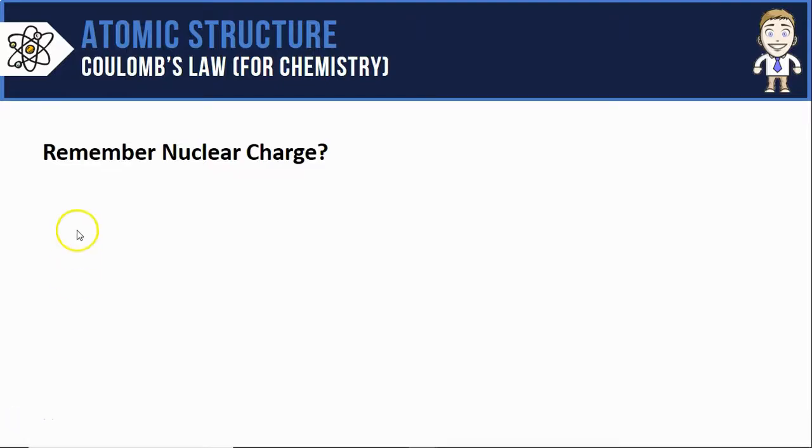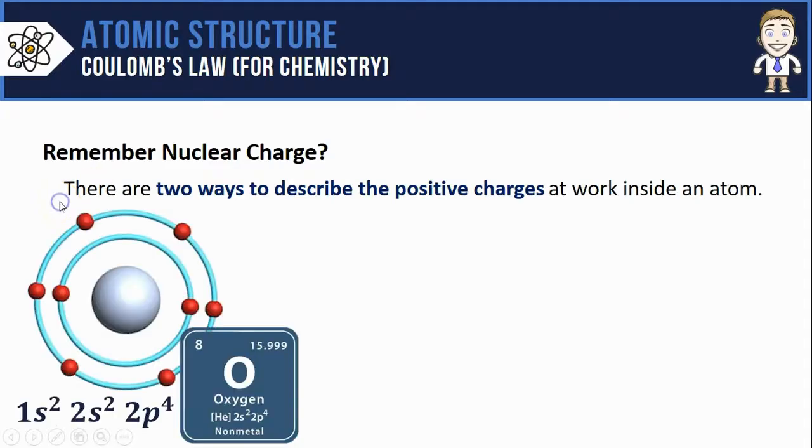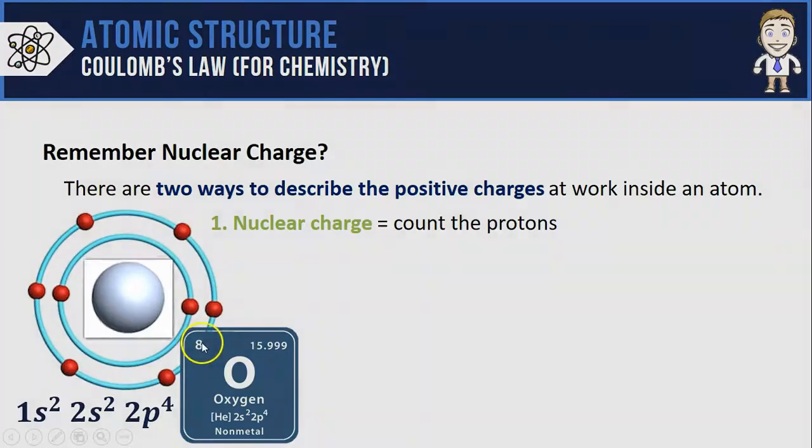To do this we've got to remember some things about nuclear charge, in particular the two ways to describe the positive charges at work inside an atom. Take this oxygen atom for example. It has a nuclear charge that is the result of the protons in the nucleus. Eight protons on oxygen means a nuclear charge of plus 8.